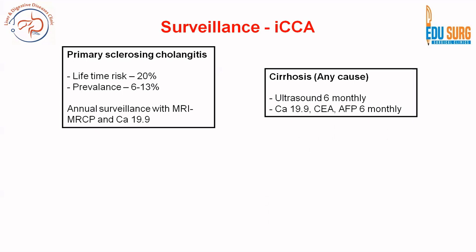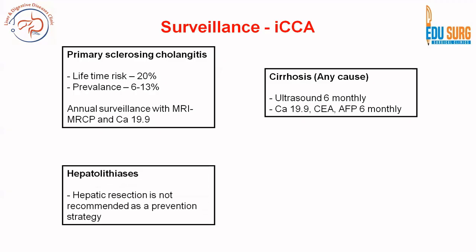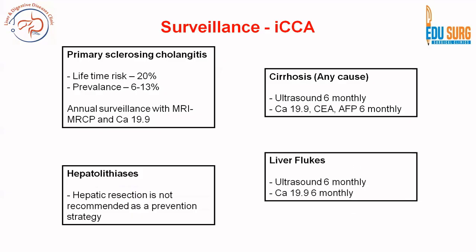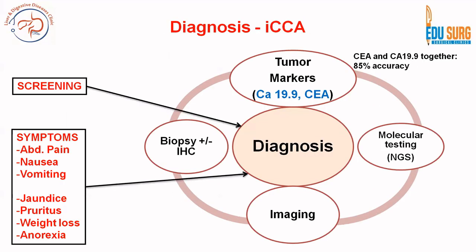For cirrhosis, as we know for HCC also, CEA, CA 19-9, alpha-fetoprotein, and ultrasound every 6 months is a good surveillance strategy. For hepatolithiasis, resection is not a prevention strategy. For liver flukes, ultrasound every 6 months and CA 19-9 every 6 months is recommended. These are some of the common risk factors for intrahepatic cholangiocarcinoma where surveillance is advised.